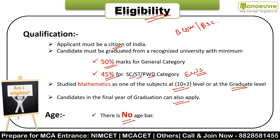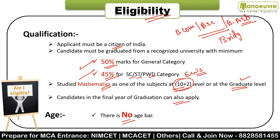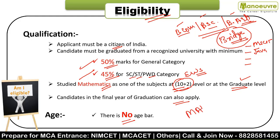For BCom, BSc, and Bachelor of Arts students, the eligibility criteria is the same - 50 percent and 45 percent, with Mathematics as one of the subjects. For Bachelor of Arts and BCA candidates, if you have done any recognized computer-related course from your university - like MSCIT, Java, or any computer-related course - and you have the intent to pursue MCA, then this is for you. Irrespective of the course you chose in graduation, BA or BCA, this is the best benefit of Maharashtra MCA-CET.